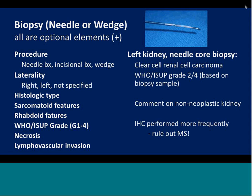A sign-out can read like this: left kidney, needle core biopsy, clear cell renal cell carcinoma, WHO/ISUP subgrade 2 of 4. I usually add a comment based on the biopsy sample and include comment on the non-neoplastic kidney if included. I encourage people to use immunohistochemistry more frequently, because needle core biopsies nowadays are used not only for definitive procedures — in our institution they're used for documentation of tumor type prior to cryotherapy, or for watchful waiting — but also to allow differentiation between a primary renal neoplasm and a metastasis.